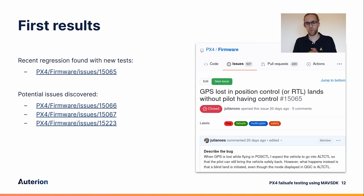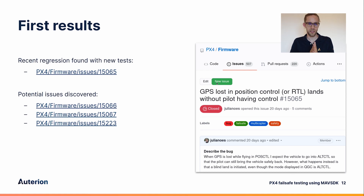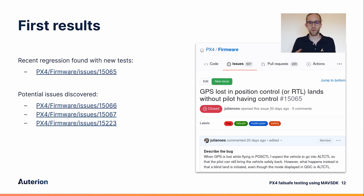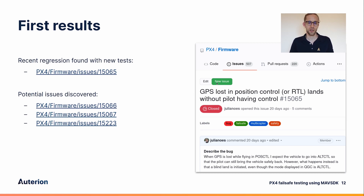I want to talk about first results. While working on this pull request, we actually already found a recent regression — luckily it was only in master for a couple of weeks. That's exactly the sort of regression we want to prevent. In this case, what happened was that if GPS was lost during position control, instead of switching back to altitude control, it would just go into blind land and the pilot had no influence whatsoever. While working on this pull request, we also found a couple of other issues, less severe than this one, but nevertheless things we need to look into. We'll presumably find more issues as we continue.